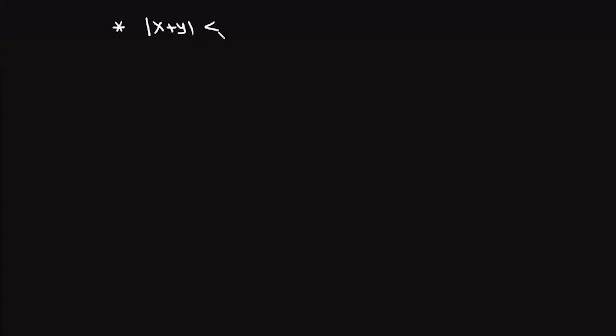There is an important shortcut in modulus functions based on inequality relationships. We know two inequalities: the first is |x + y| ≤ |x| + |y|, and the other is |x - y| ≥ ||x| - |y||. You'll find many problems where rather than this inequality you'll be given an equality.